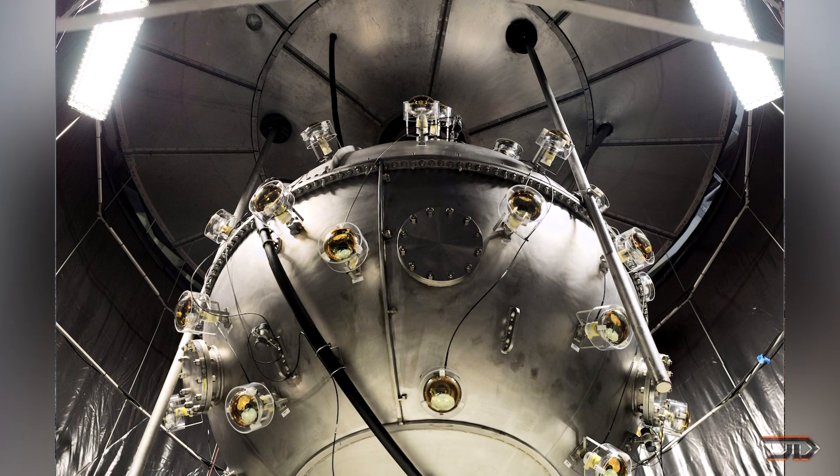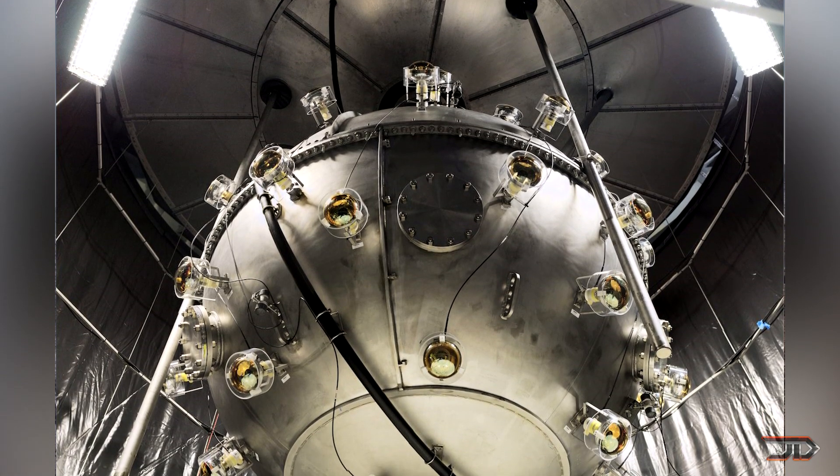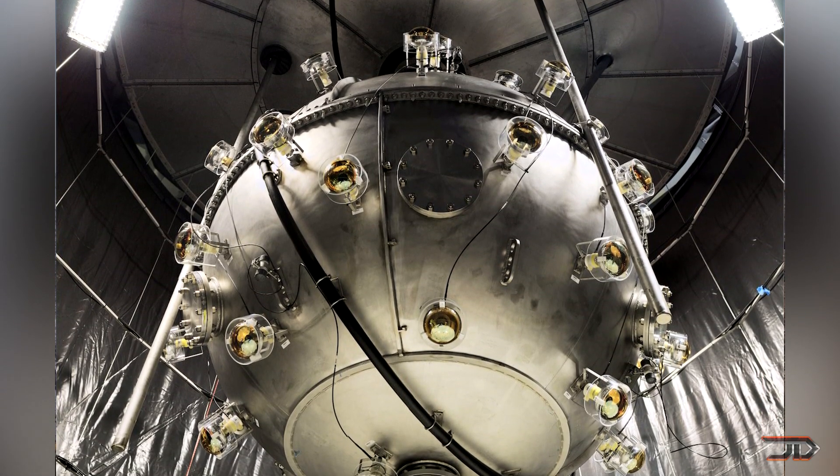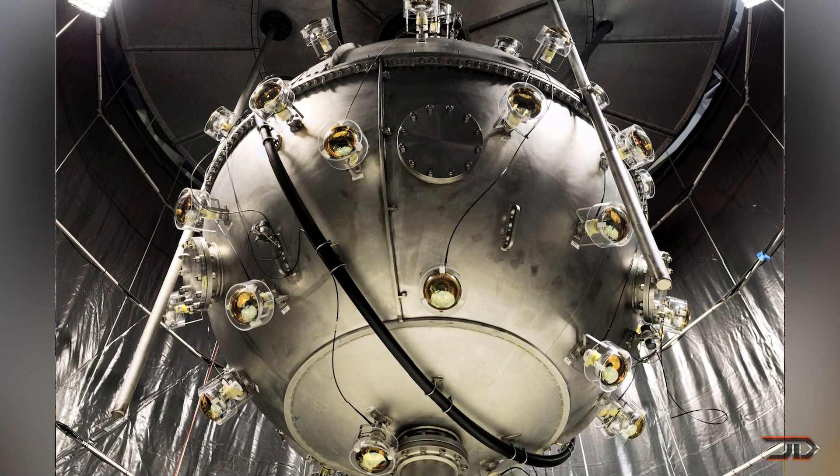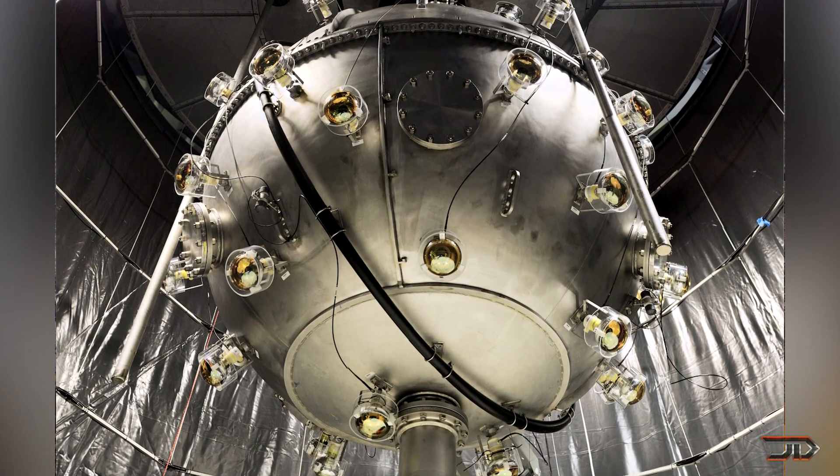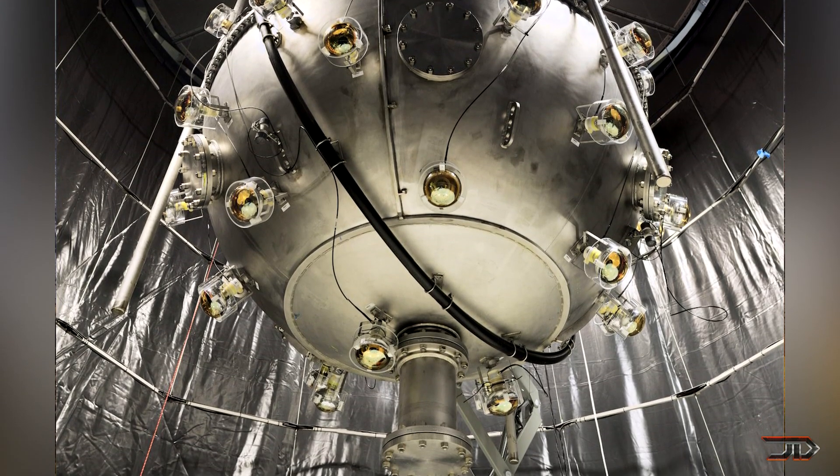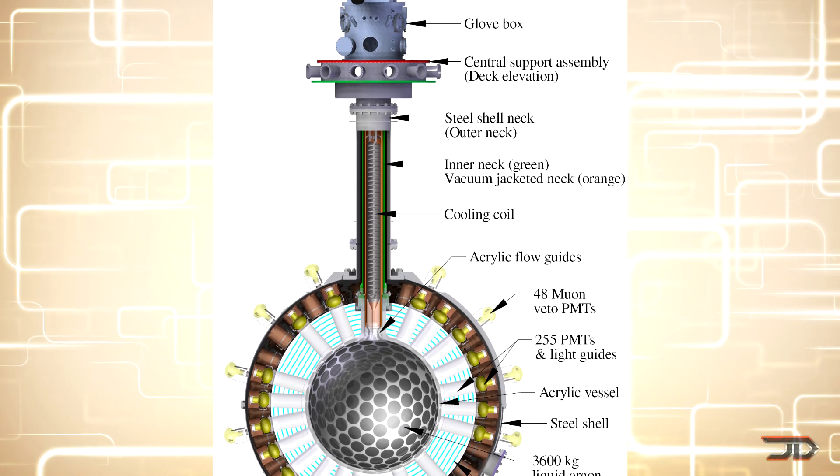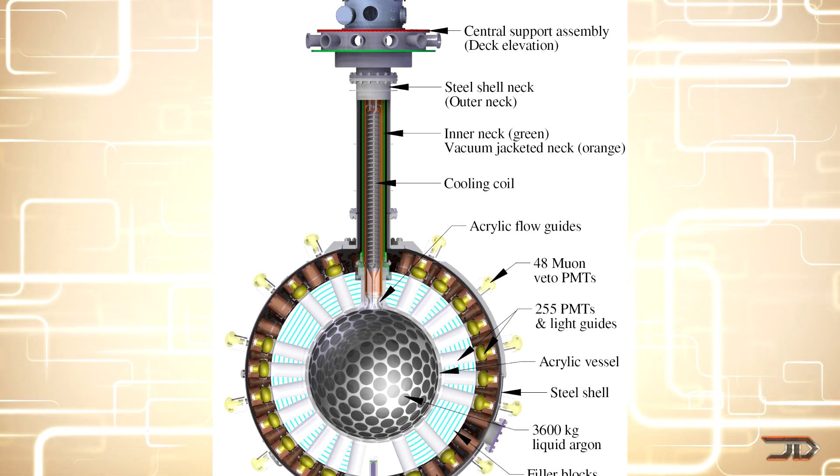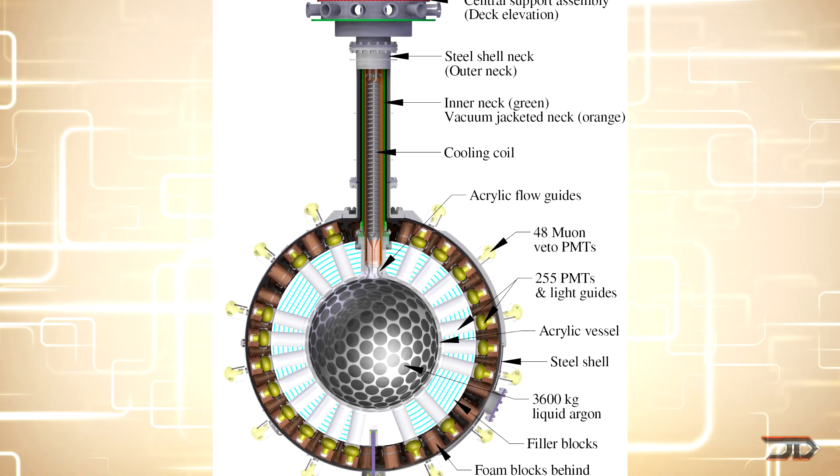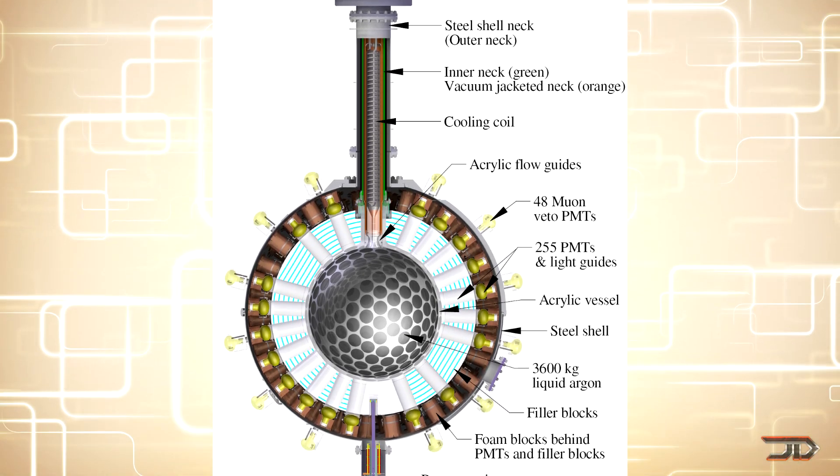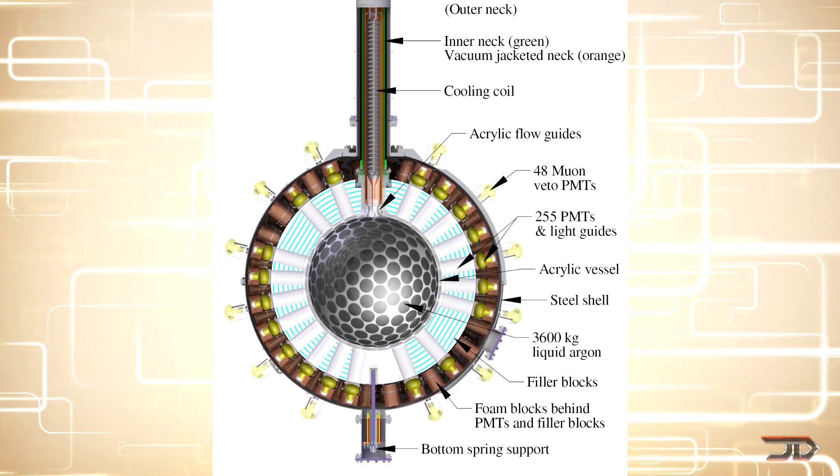Another interesting project involves the DAP detector, which detects dark matter. And as you probably know, dark matter is the missing piece complementary to dark energy and it would also explain why galaxies don't fly apart. This contains over three tons of argon, and once again, light is detected from interactions with dark matter particles.